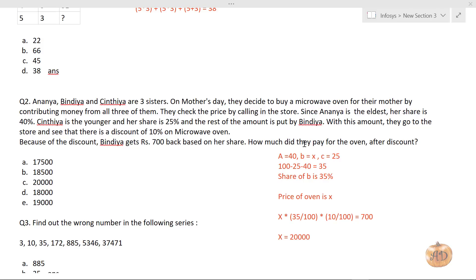But the question asks how much did they pay after discount. This is the MRP, and after discount means 10% off. To calculate, we use the general formula: 20,000 × 90/100, which gives 18,000. Why 90? Because 10% discount means 100 minus 10 equals 90. So the selling price is 18,000, the correct answer.